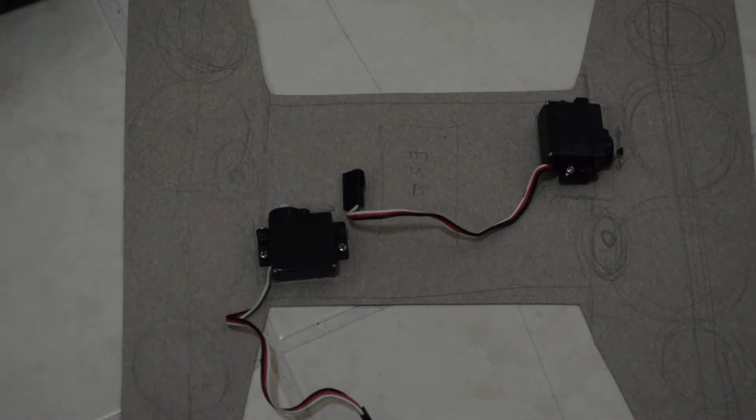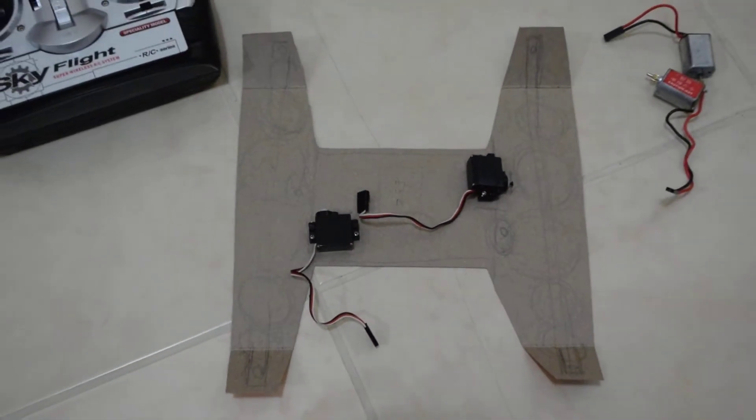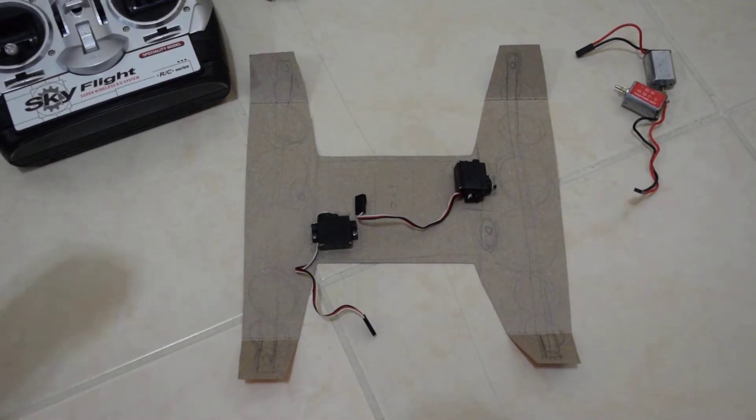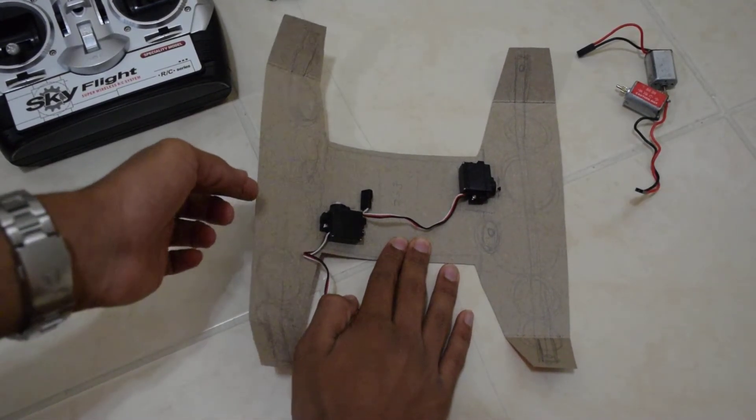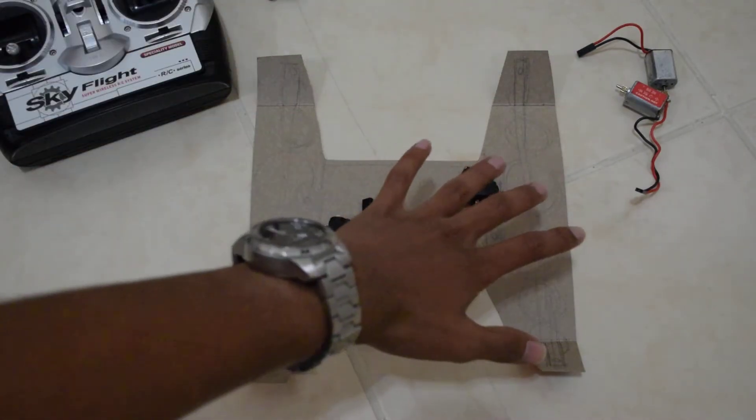Now this servo here is going to tilt this tail section. So I'm just going to zoom out a bit. It's going to tilt this section up and down which will allow it to move forward and backwards so this is the front here.